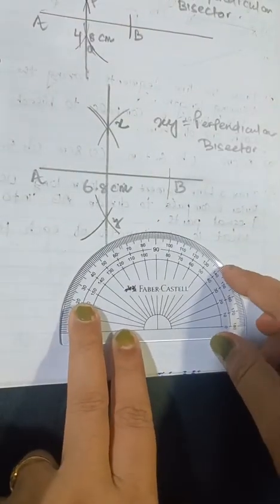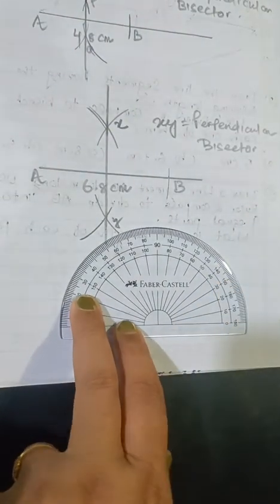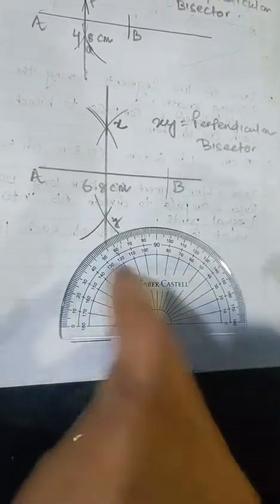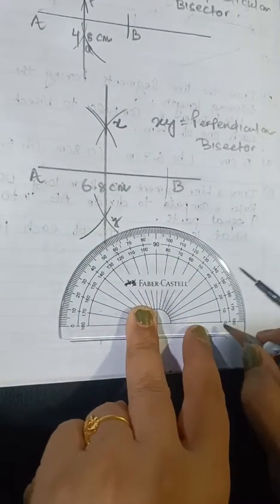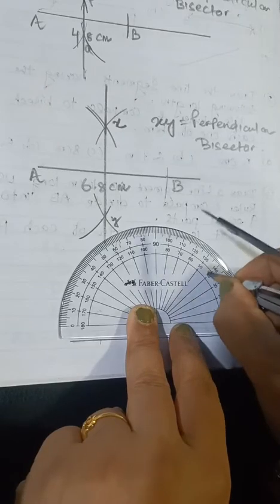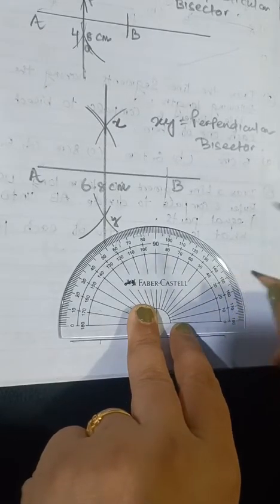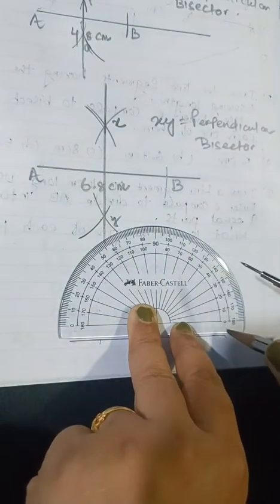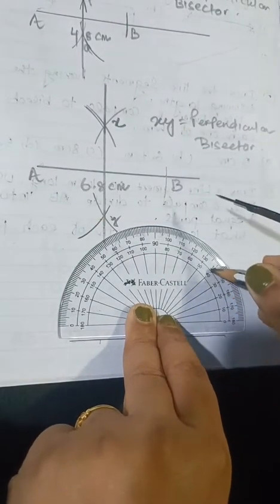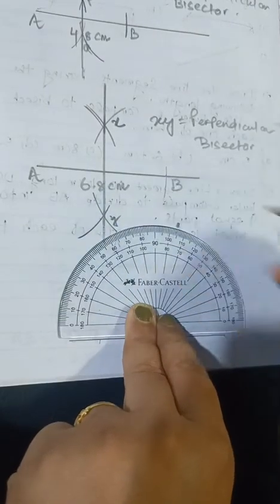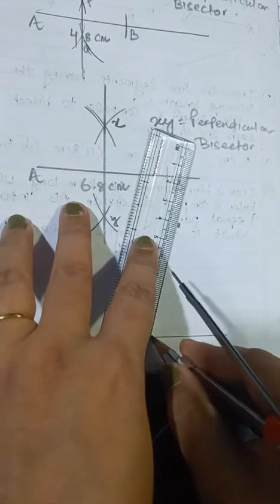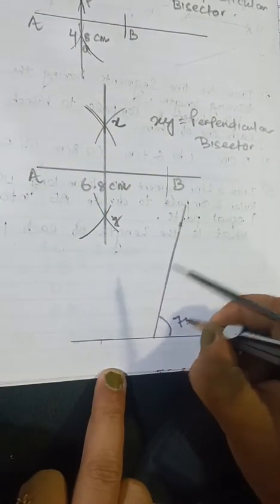Place the protractor here and draw the line. From this side, starting from 0, count 10, 20, 30, 40, 50, 60, 70, 75. This one is 75 — it is between 70 and 80, and the middle one is 75. This one is 75 degrees.